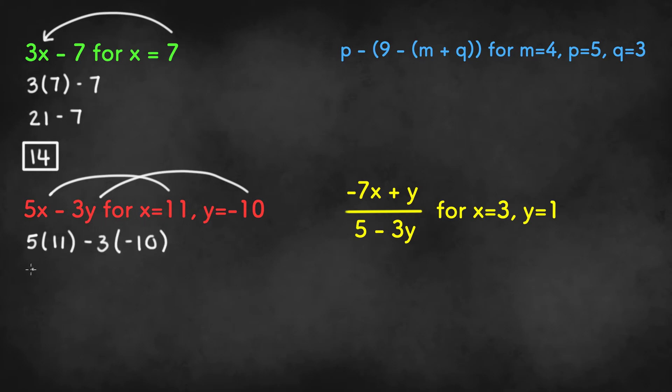5 times 11 is 55, and negative 3 times negative 10 is positive 30. When you are multiplying two negative numbers together, the product will be positive. So 55 plus 30 equals 85, and that's our final answer.